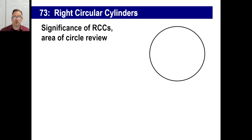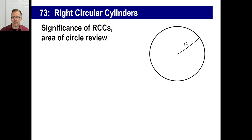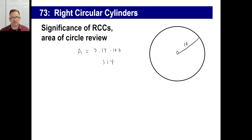They're structurally sound, so they use them. Let's go back and make sure you remember the area of a circle. If this is a circle with a center and a radius — let's say it's 10 — what is the area of the circle? In other words, if the radius is 10 inches, how many squares are going to fit into the entire circle? You have to know this formula. The area of a circle is pi — 3.14 — times the radius squared. The radius squared in this case is 100, so 3.14 times 100 is approximately 314.